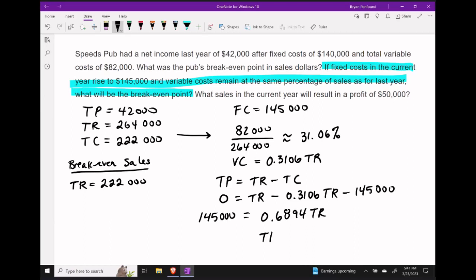So if I want to figure out what revenue level I need in order to break even this year, I can divide both sides by 0.6894. And doing this division gives us a break even sales amount of around $210,327.82.